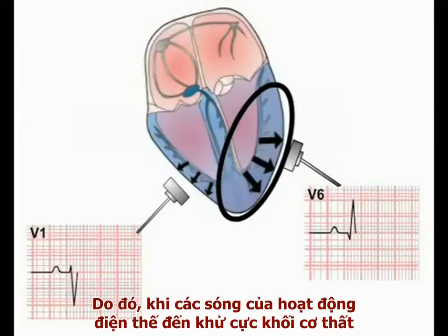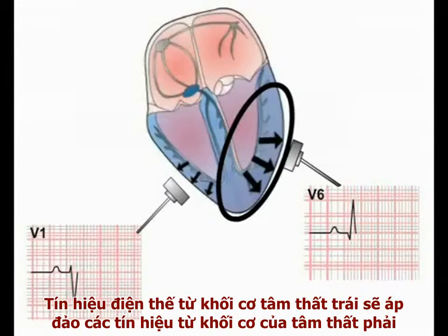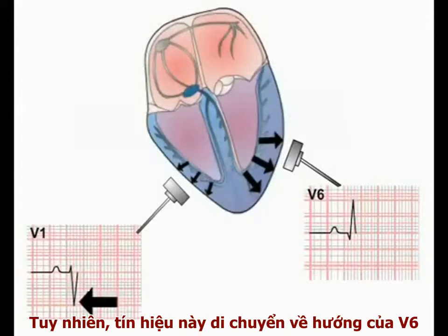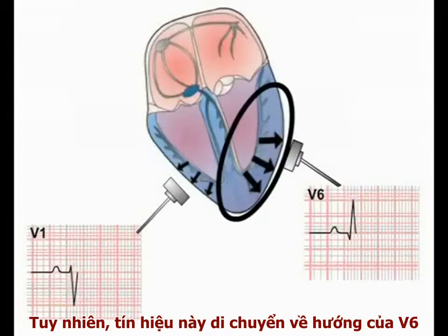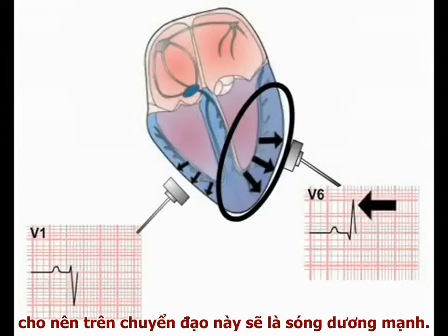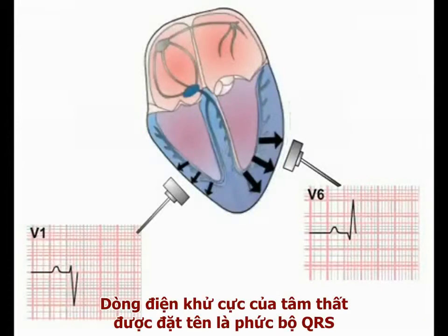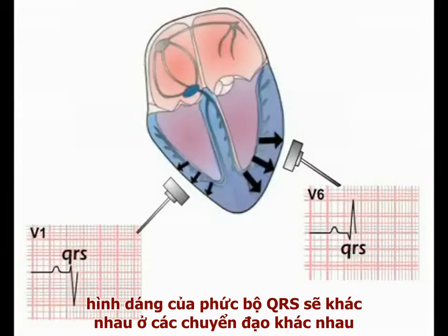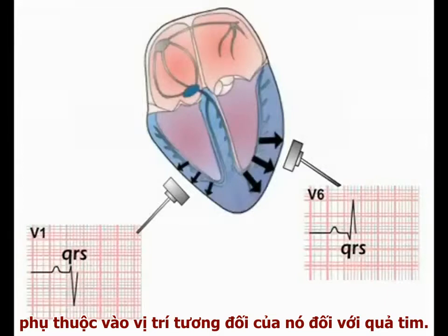Therefore, as the wave of electrical activity reaches the main muscle mass of the ventricles, the left ventricular signal overwhelms all other signals. As it is moving away from V1, the deflection produced on the ECG recording from this lead becomes negative. In contrast, this signal is moving towards lead V6, producing a strong positive deflection. The flow of depolarizing current around the ventricles is recorded as the QRS complex, and the morphology of the QRS complex differs predictably in the ECG leads depending on their position relative to the heart.